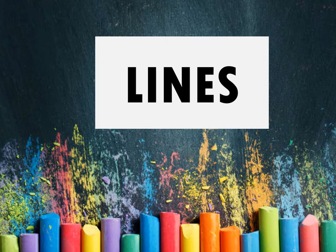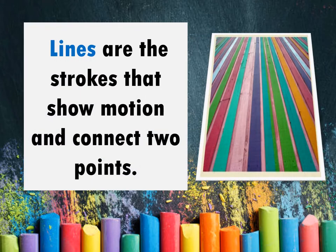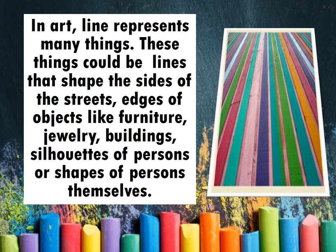The first one is lines. Lines are the strokes that show motion and connect two points. In art, line represents many things. These things could be lines that shape the sides of the streets, edges of objects like furniture, jewelries, buildings, silhouettes of persons, or shapes of persons themselves.